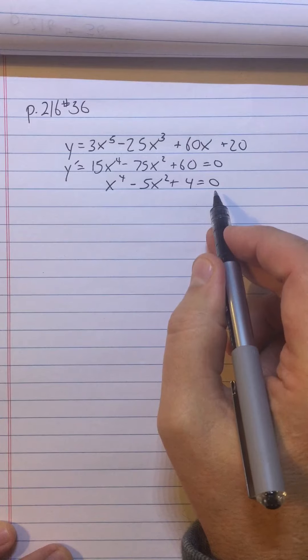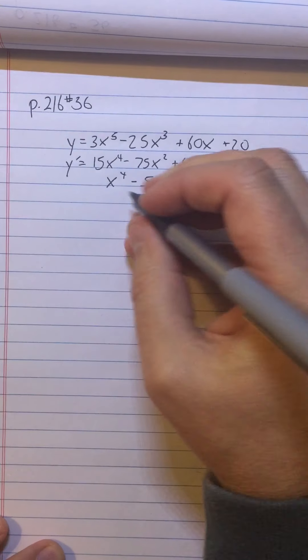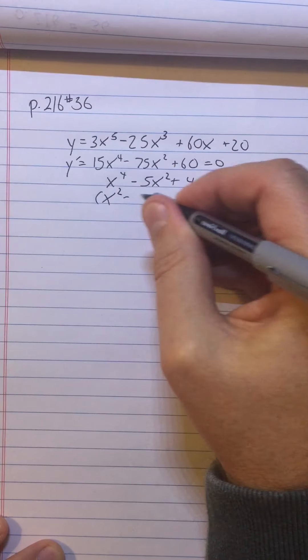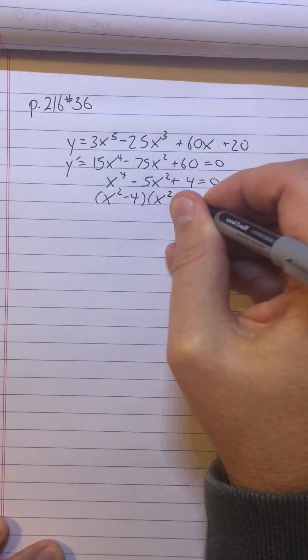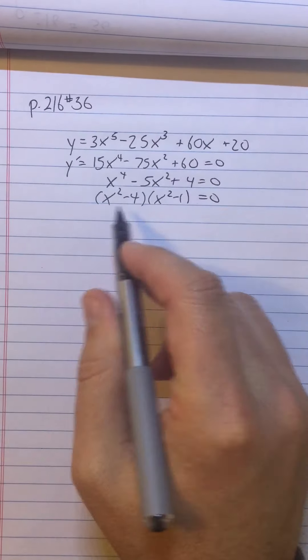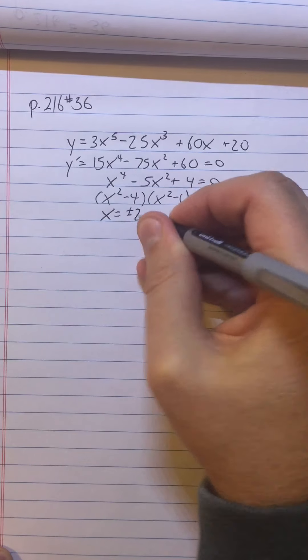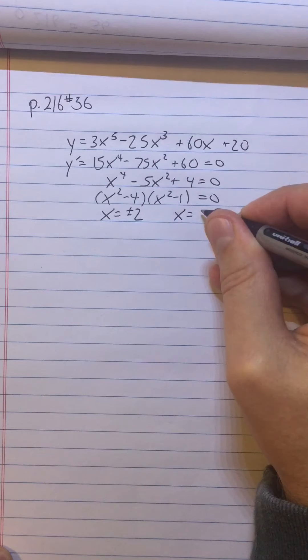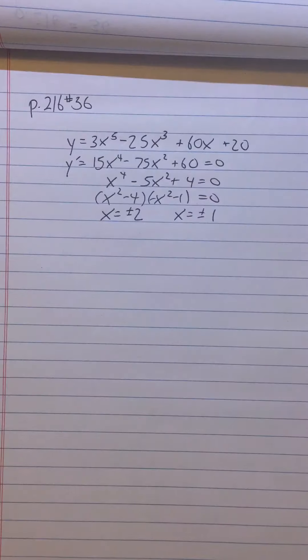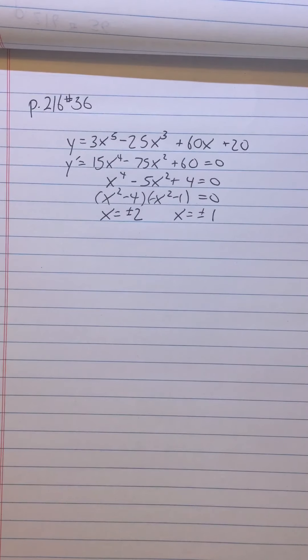This is what we call quadratic form, so we can factor it as (x² - 4)(x² - 1) = 0. So you can readily get from this that x = ±2 from this factor, and x = ±1 from this factor. So this time we have four different critical points.